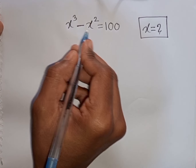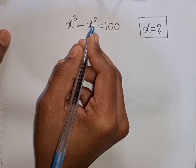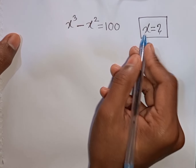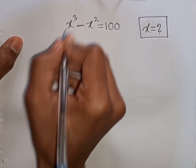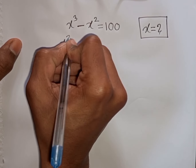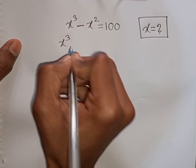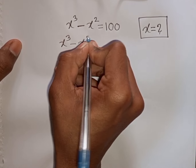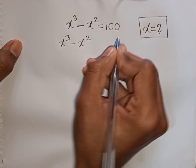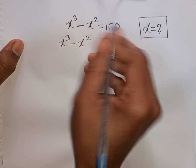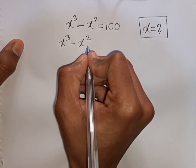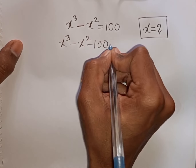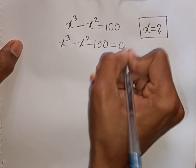x³ - x² = 100. Find the value of x. We have x³ minus x², then take +100 to the left side, so it will be minus 100, equal to 0.